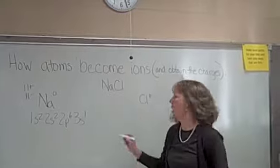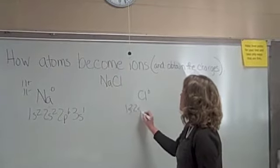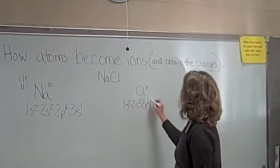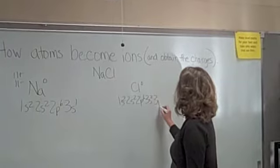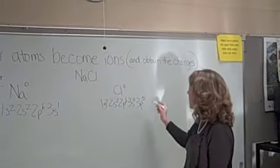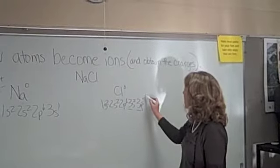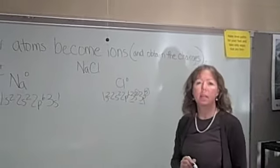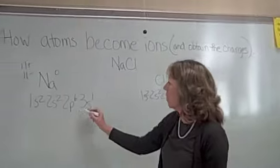Neutral chlorine has 1s2, 2s2, 2p6, 3s2, 3p5 as its electron configuration. As you can see, it has 7 electrons in its outer shell. Let's look at sodium again.